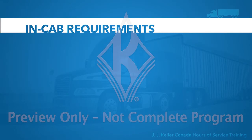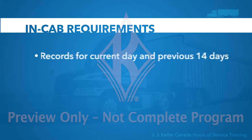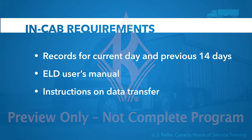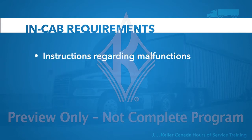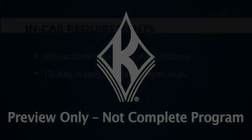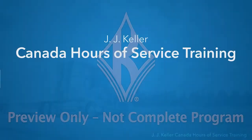There are several items you must have in your vehicle. At a roadside inspection, an officer will verify you have records for the current day and the previous 14 days, the ELD user's manual, an instruction sheet on data transfer during roadside inspections, an instruction sheet regarding malfunctions, and at least a 15-day supply of blank paper logs to be used if the device fails.